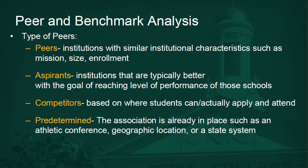First, we're going to start with defining peers and aspirants. Peers are institutions with similar institutional characteristics such as mission, size, and enrollment. Aspirants are institutions that are typically better, with the goal of reaching the level of performance of those schools. Competitors are based on where students can actually apply and attend. Predetermined associations are already in place, such as athletic conference, geographic location, or state system.